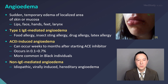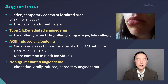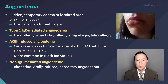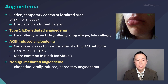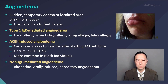ACE inhibitor-induced angioedema is a peculiar reaction that can occur weeks to months after starting a patient on an ACE inhibitor. It occurs in about 0.1 to 0.7 percent of individuals and is more commonly found in Black individuals. It doesn't follow the traditional IgE-mediated reaction, so it's not immediate in onset. It is caused by a bradykinin mechanism, which is why it occurs weeks to several months after starting an ACE inhibitor.